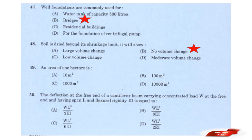Question: An area of 1 hectare is? Options: 10 m²; 100 m²; 1000 m²; 10,000 m². Answer: Option D — 10,000 m². An area of 1 hectare is 10,000 m².